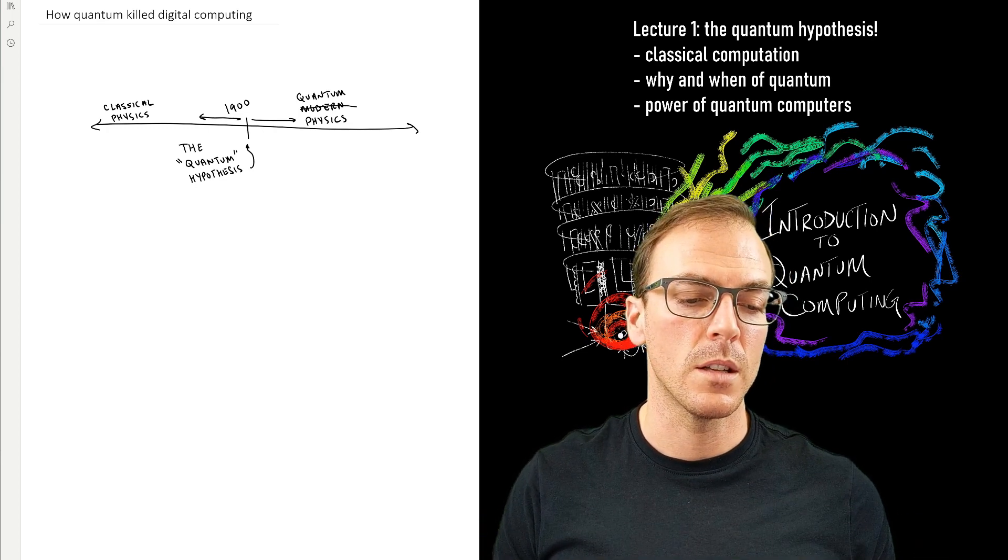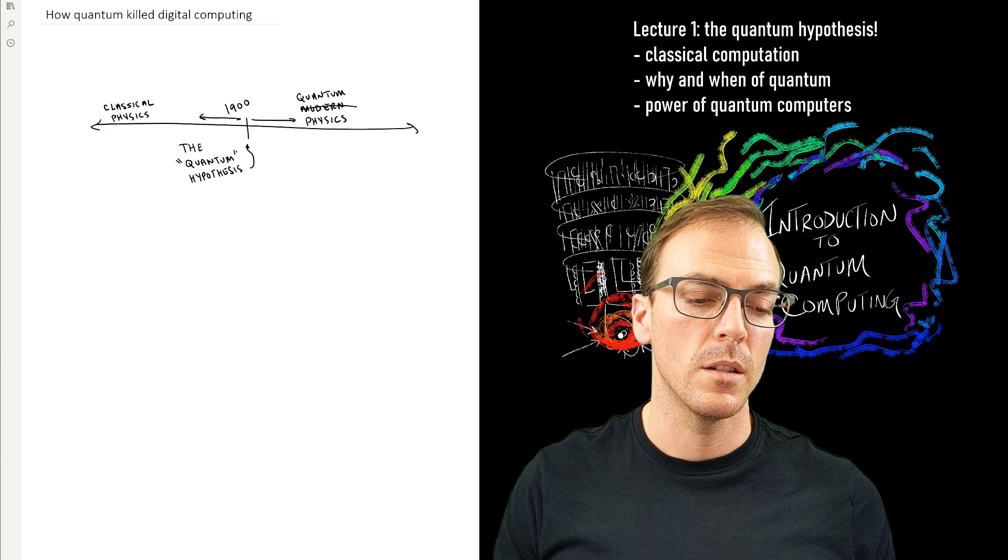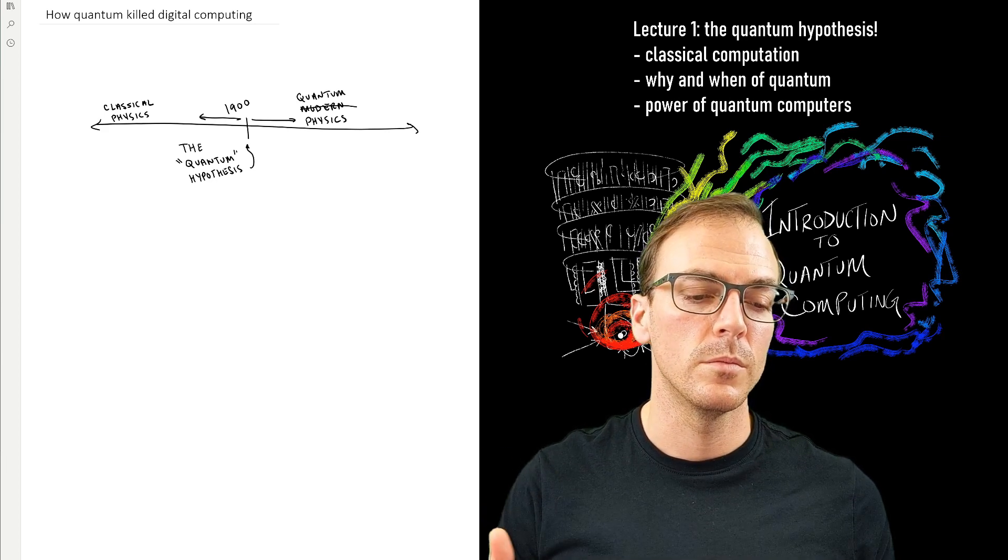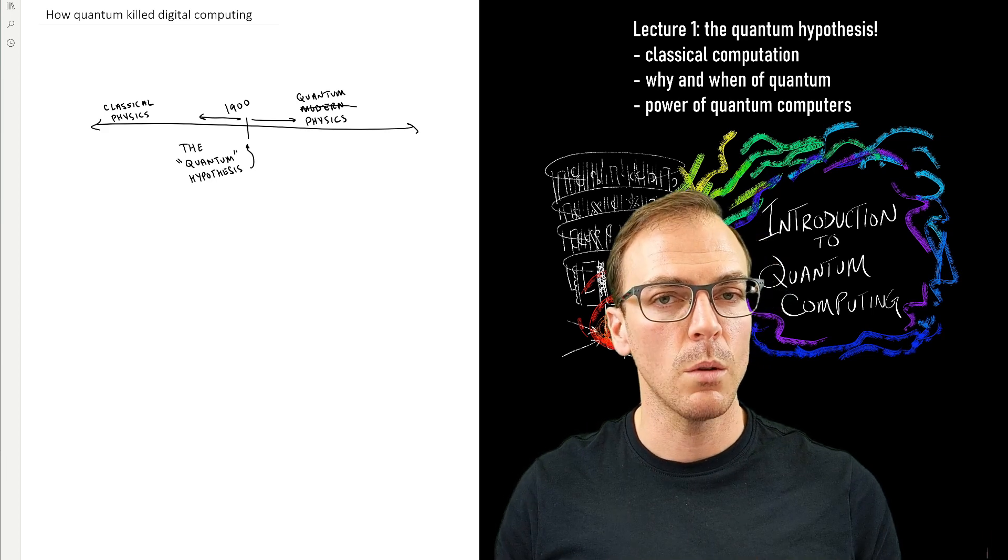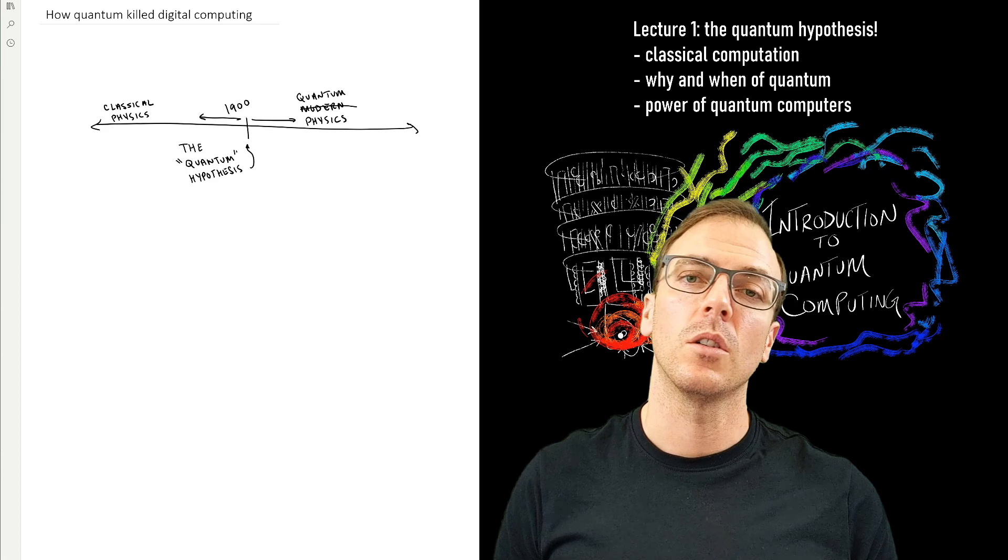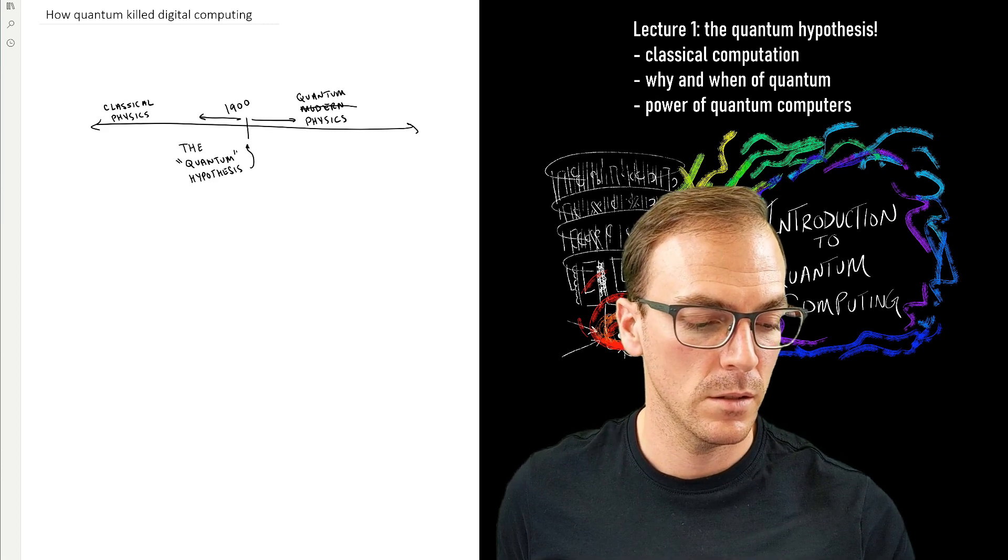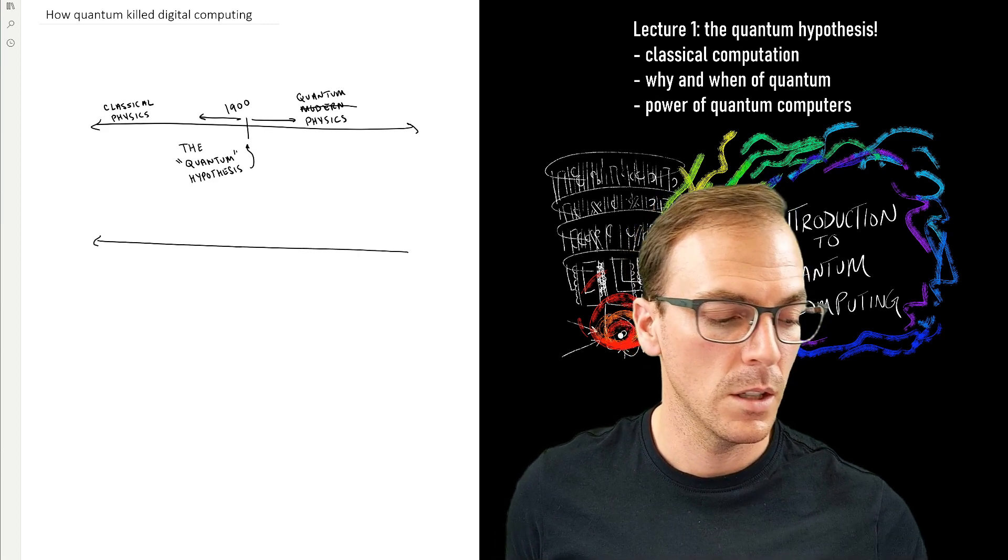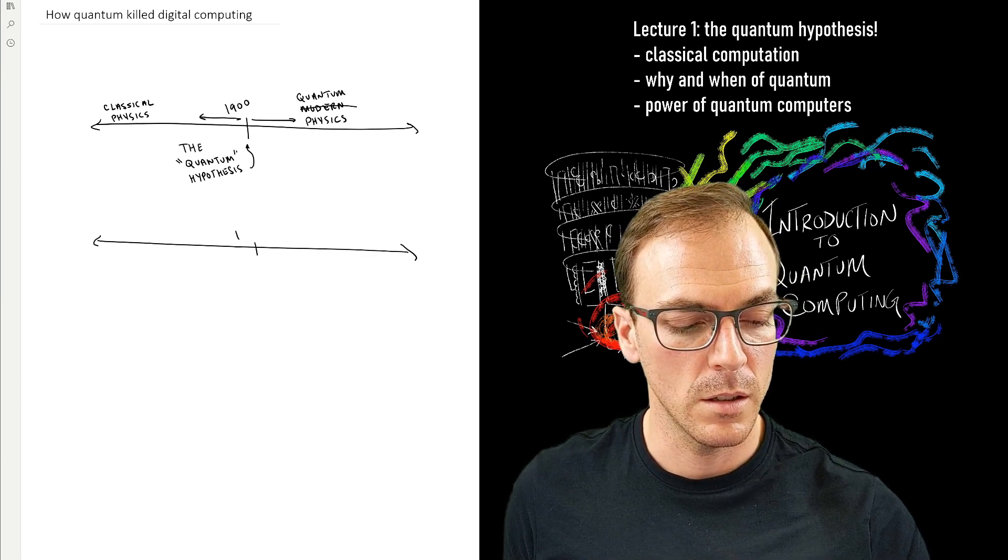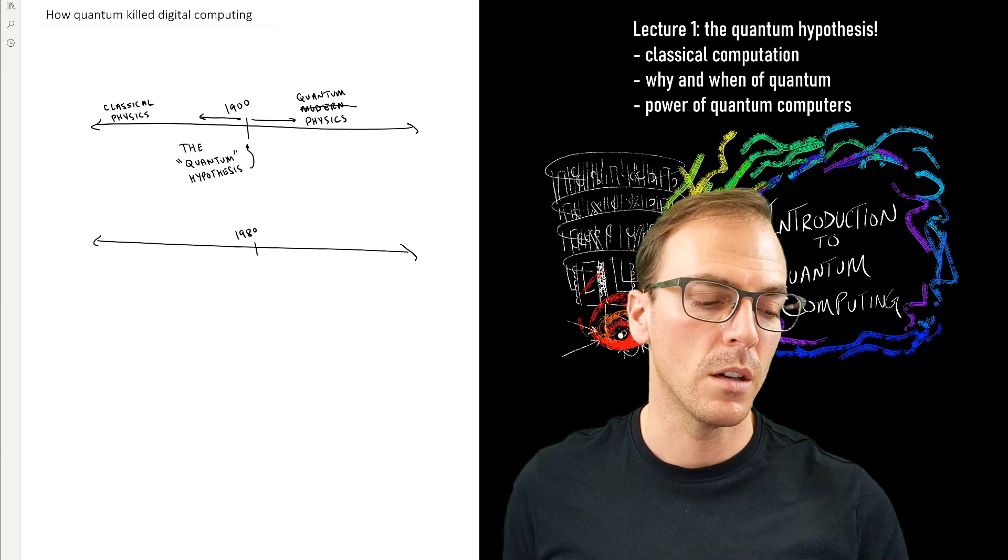And so it, in some sense, has overtaken classical physics. So we have modern physics, which is quantum physics, and then premodern physics, which would be Newton, is called classical physics. So that term classical comes from the history of physics.